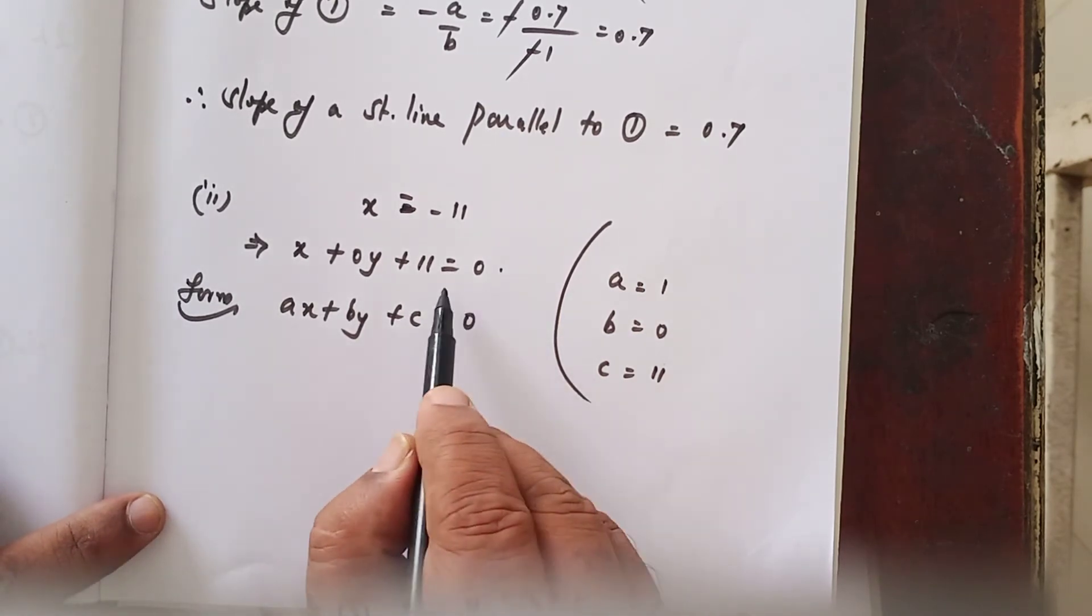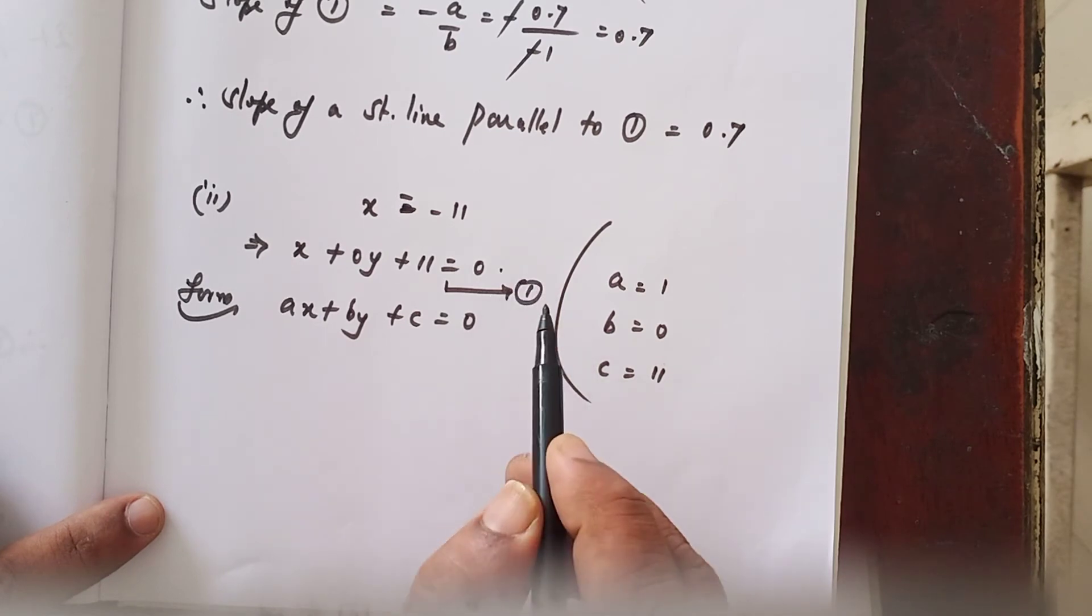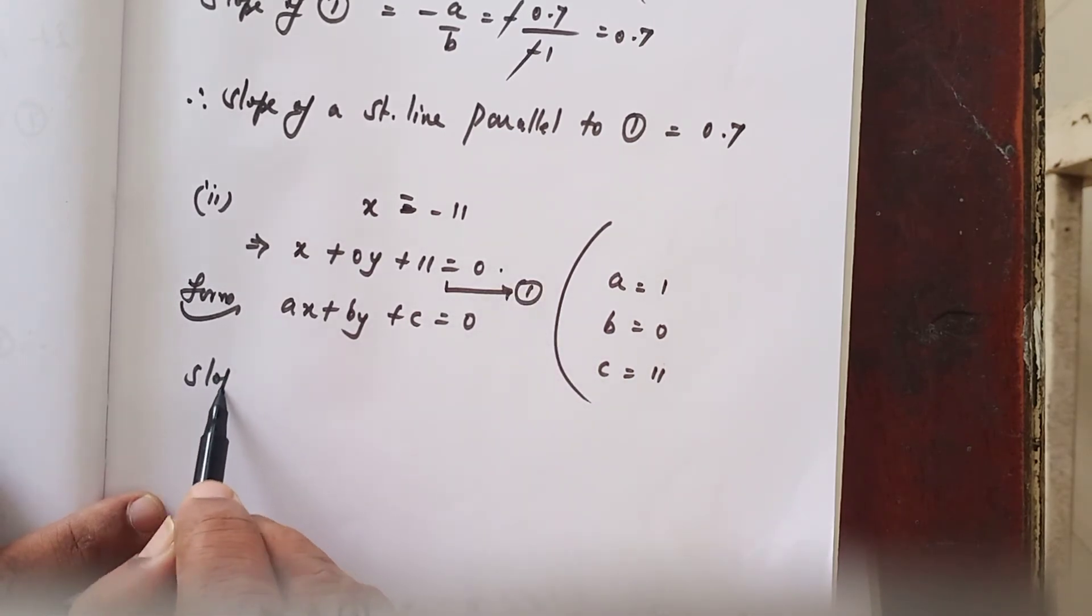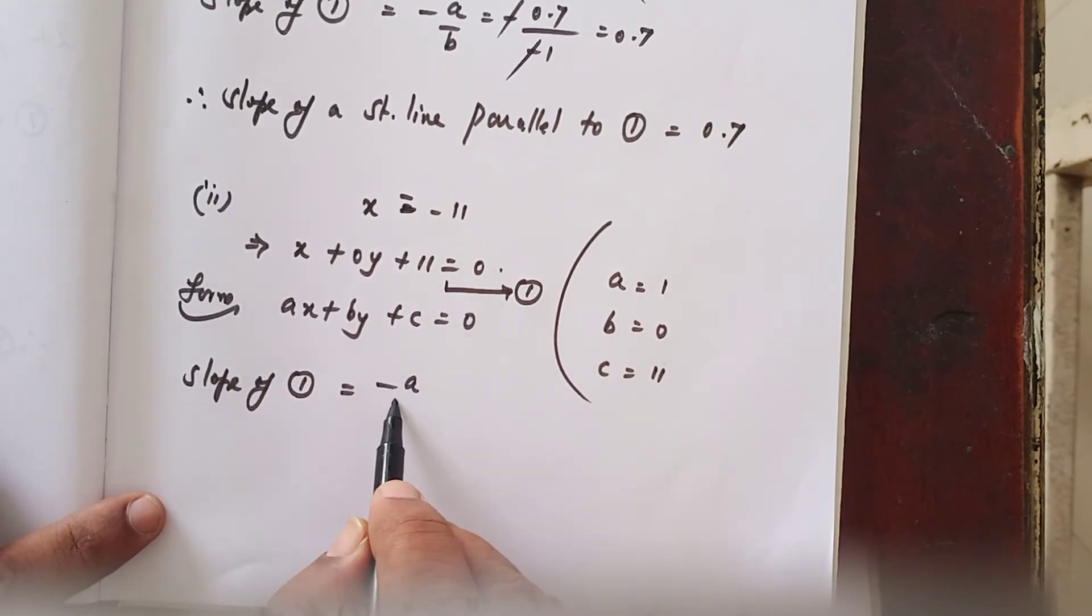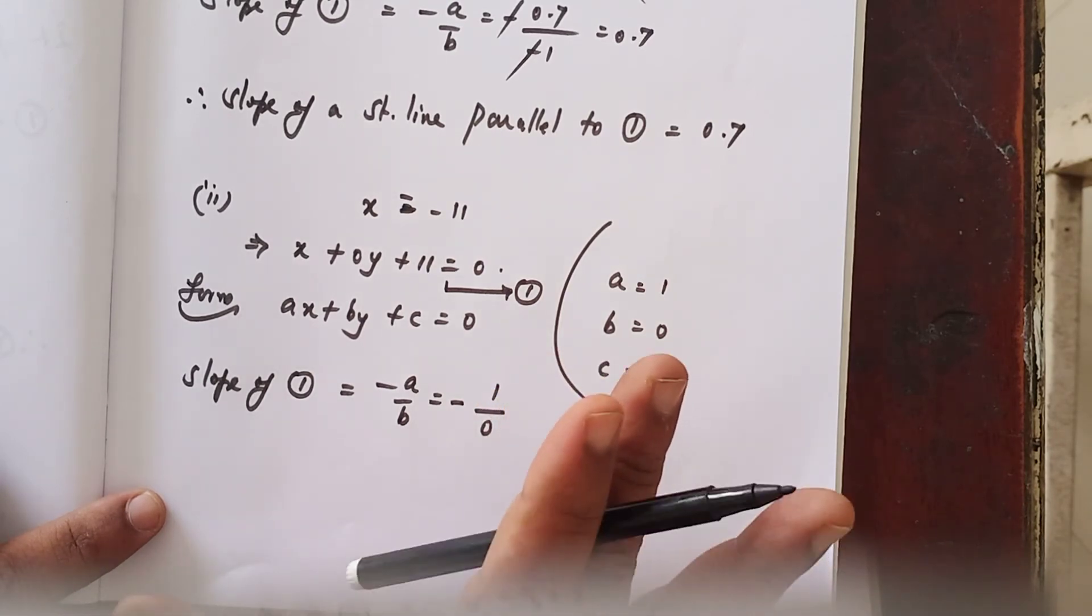Now, slope, let it be equation number 1, slope of 1. Since this is an equation, slope formula minus a by b equals minus a value 1 divided by b value 0, minus 1 by 0. Actually, anything by 0 is undefined. So, you let it be minus 1 by 0.